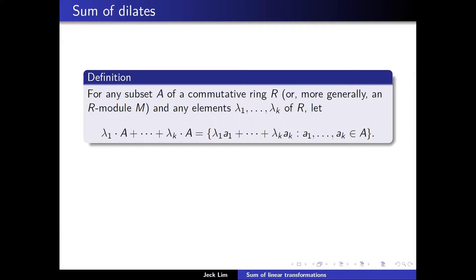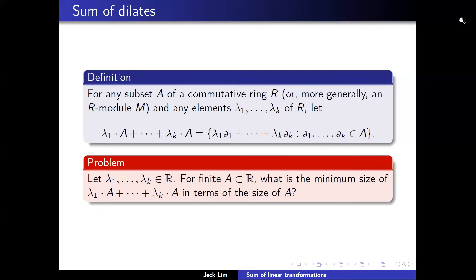So this is the sum of dilates and a natural question to ask is: just in the ring of real numbers, if you have k real numbers lambda_1 to lambda_k, what is the minimum size of lambda_1 A plus ... plus lambda_k A in terms of the size of A?